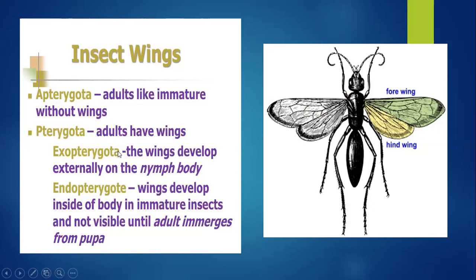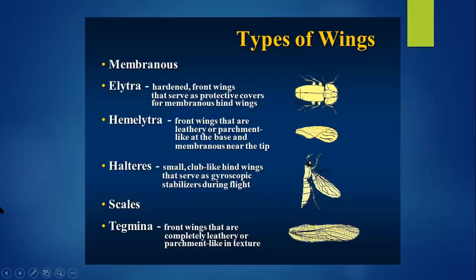If wings develop externally on the nymph body, they belong to exopterygota. If wings develop inside the body and are not visible until the insect becomes an adult, they are called endopterygota. So based on the presence and development of wings, insects are classified as apterygota, pterygota, exopterygota, or endopterygota.